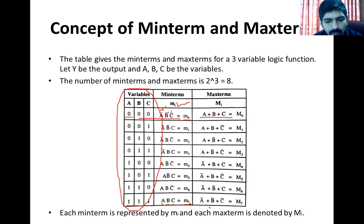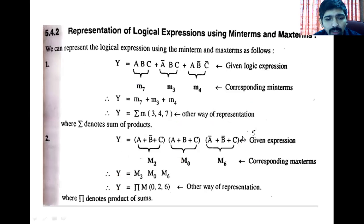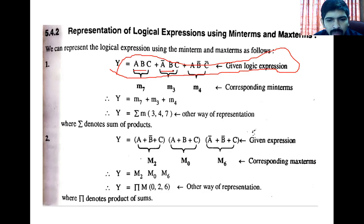We will denote: if the input is 1, 1, 1, then we denote the min term as A, B, C — where the value is 1, we will not put a bar; where the value is 0, we will place a bar. And we denote the position of the max term. In the max term, every individual term becomes a sum term — meaning every variable will have an OR operation. We denote a bar with 0 and the normal variable as is. Wherever there is 1, like 1, 1, 1, we denote A bar plus B bar plus C bar, and we denote the max term with capital M.